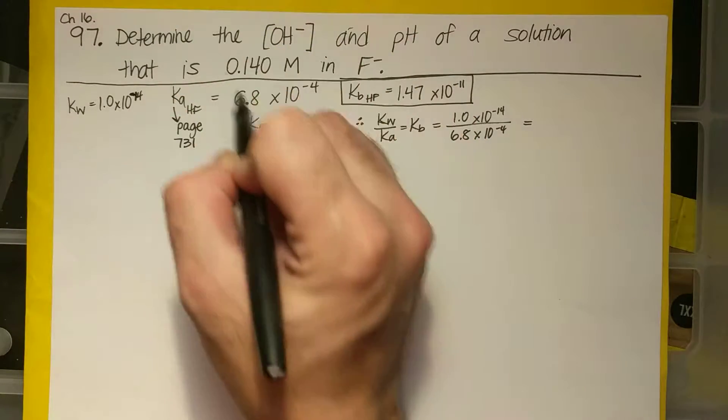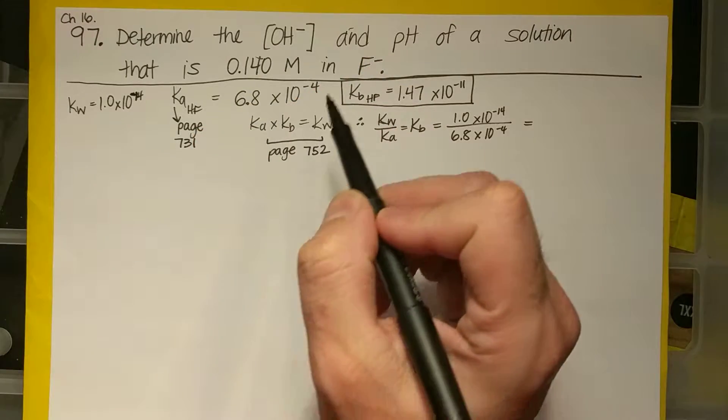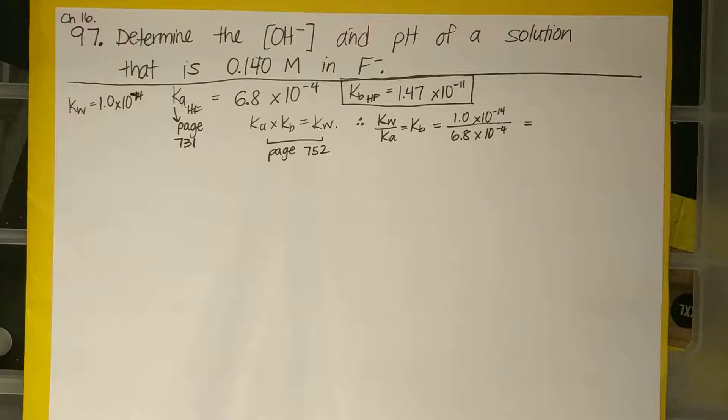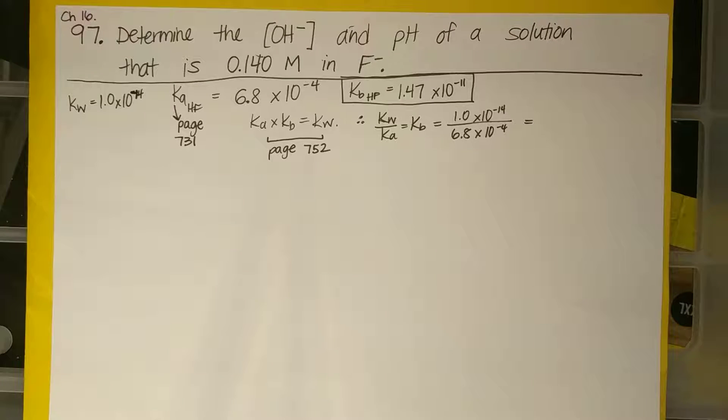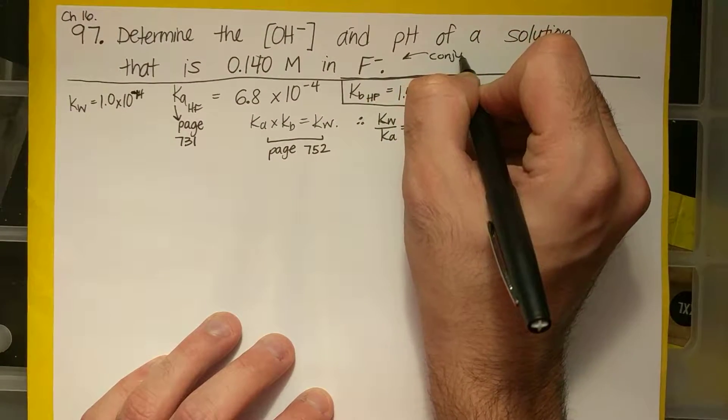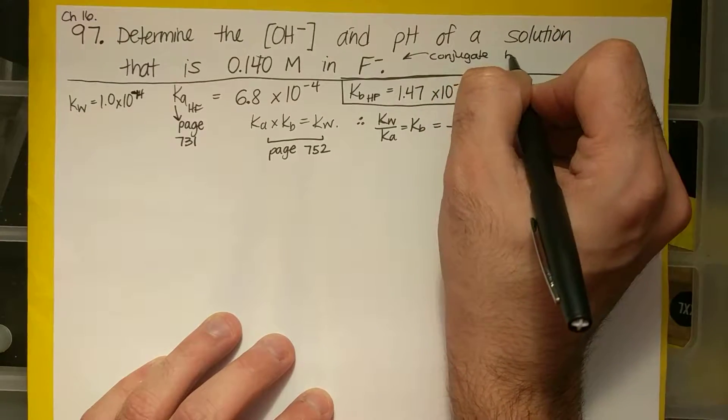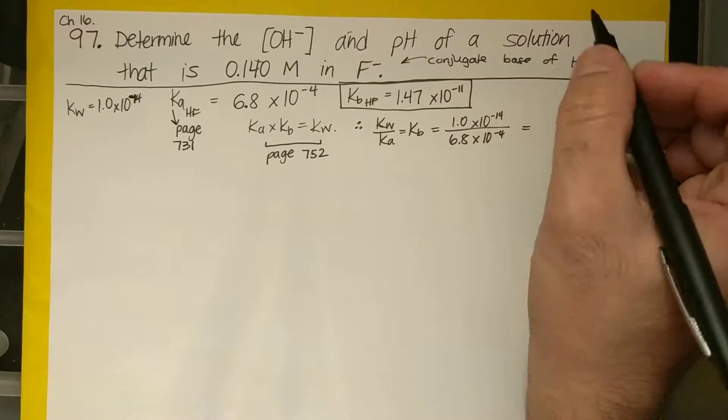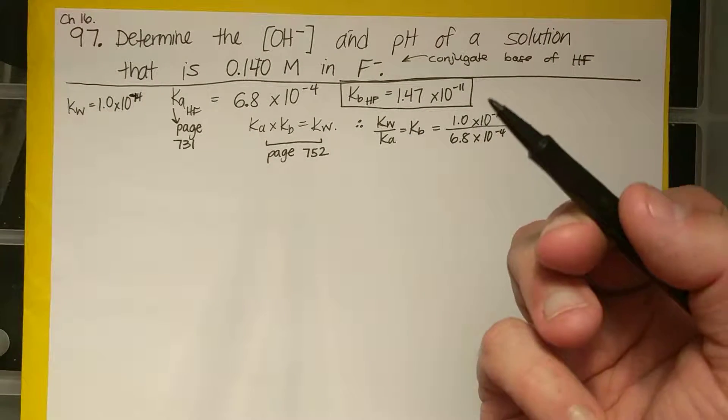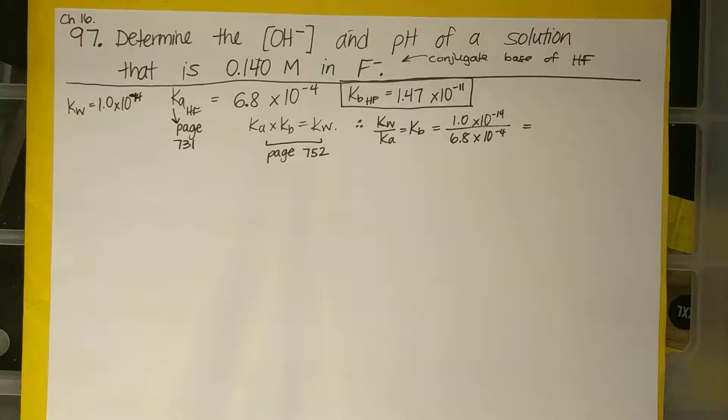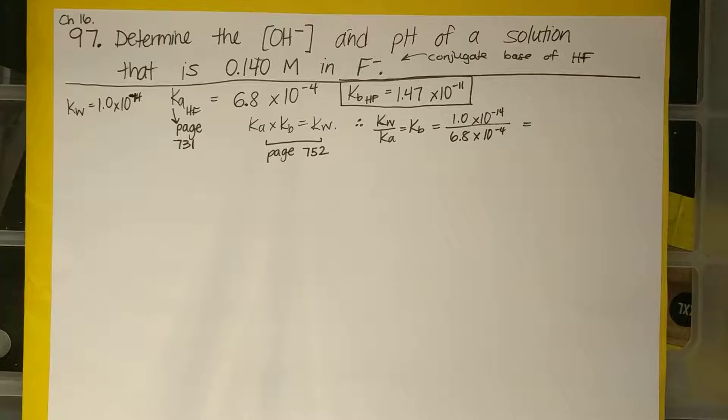Let's look at this question. It says determine the OH⁻ concentration and pH of a solution that is 0.14 molar in F⁻. Now there's a couple of things that you need to know and consider for this problem. F⁻ is the conjugate base of HF. How do I know that? Well, if I have F⁻, if I want to make the acid of it, I add H. I have HF, and HF is a weak acid.